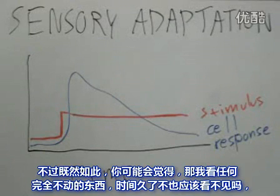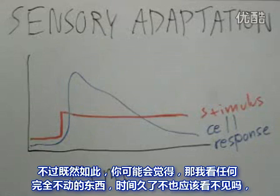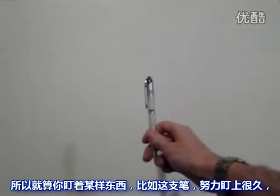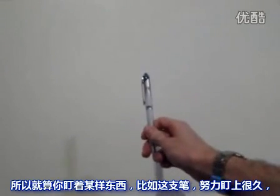That being said, you'd then expect that if you look at anything that's not moving for long enough, you would just stop seeing altogether. So why doesn't that happen? The reason is that your eye is never truly still. So even when you're staring at something — like this pen — for a really long period of time...